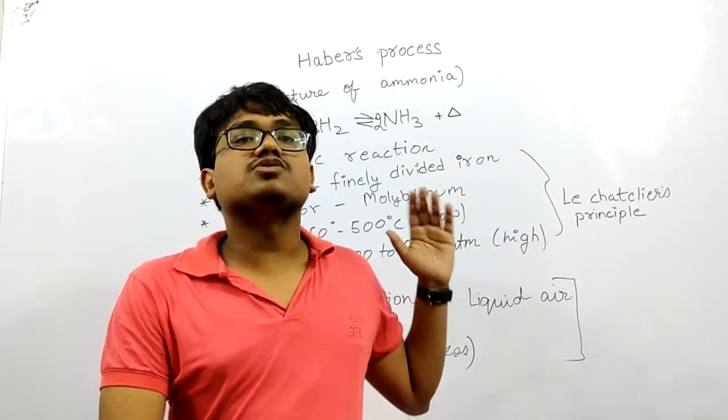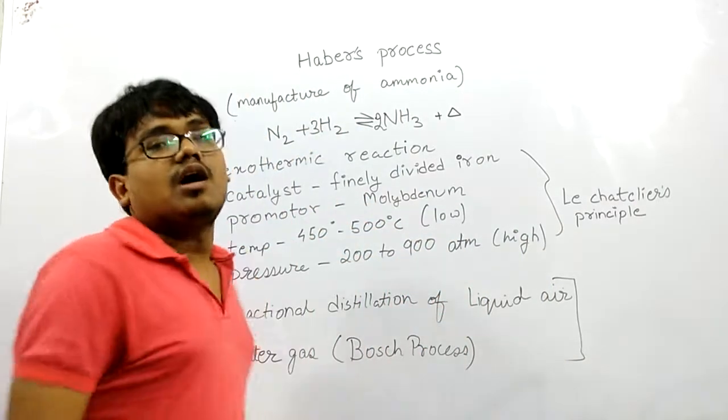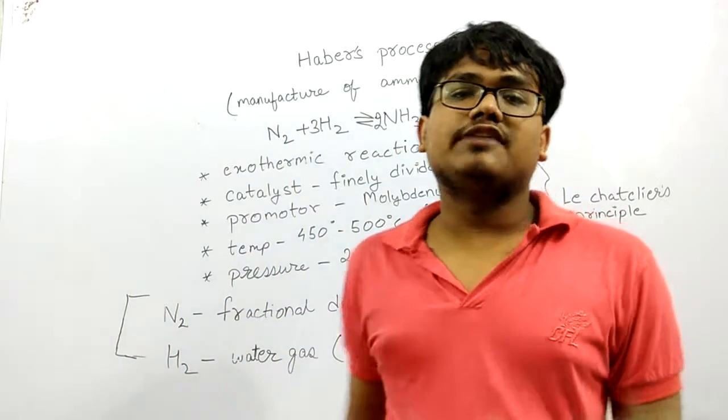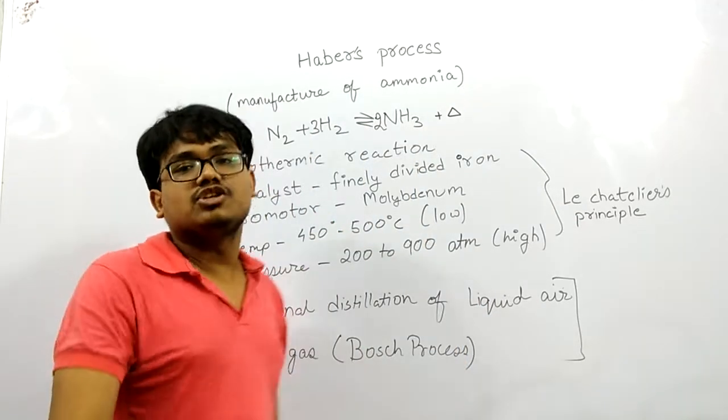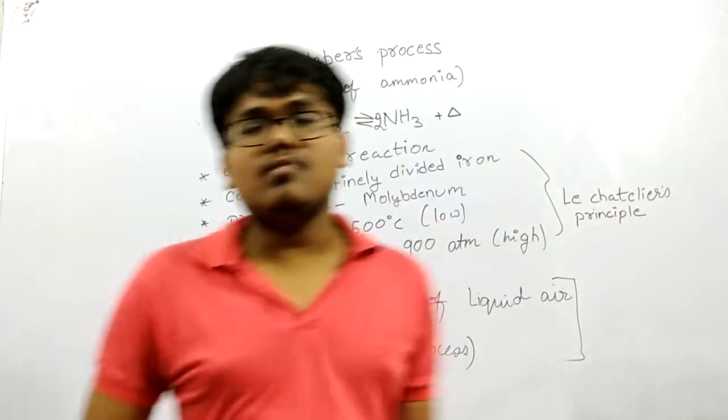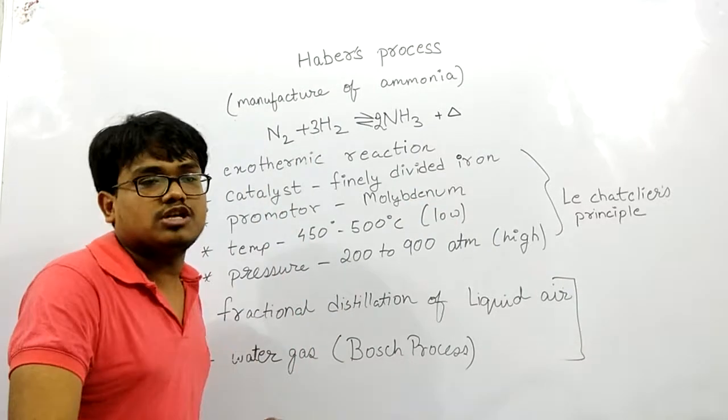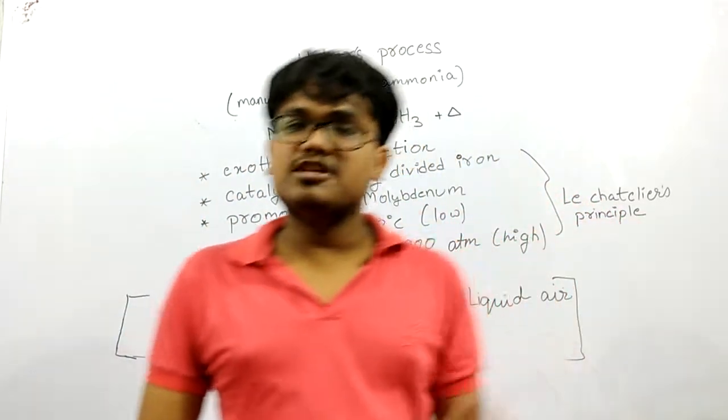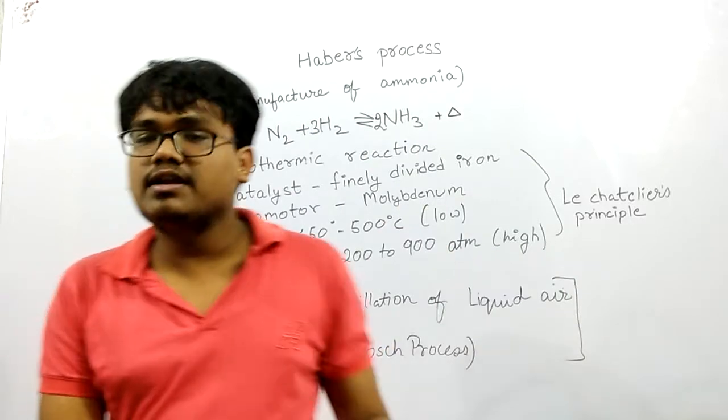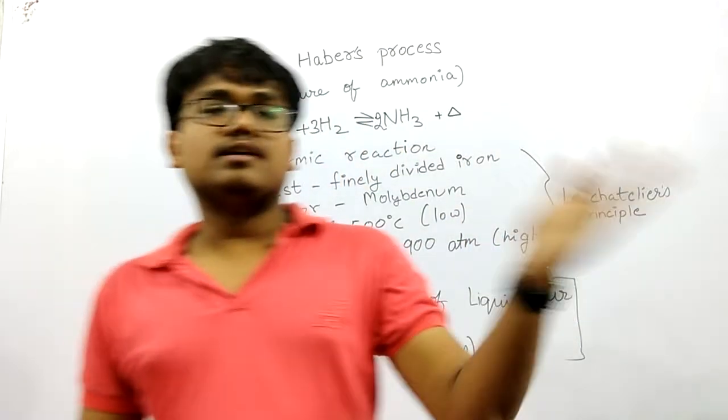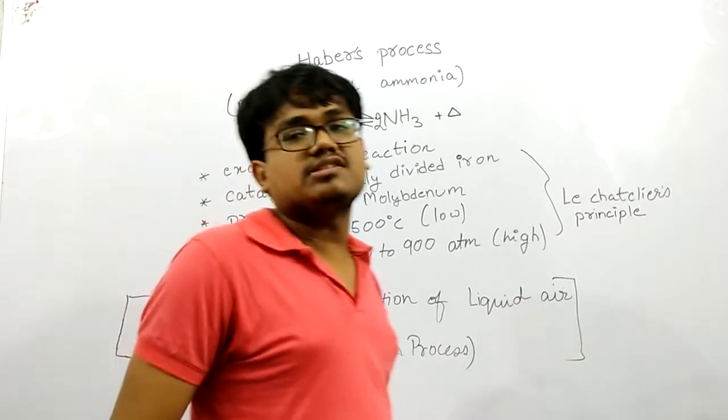Let's see a previous year's question from 2010. The question asked: name the process, what is the catalyst used, write the equation, and what are the reactants ratio? The answer: the process is Haber's process, hydrogen and nitrogen react in the ratio 3:1, the equation is N₂ + 3H₂ → 2NH₃, and the catalyst is finely divided iron.